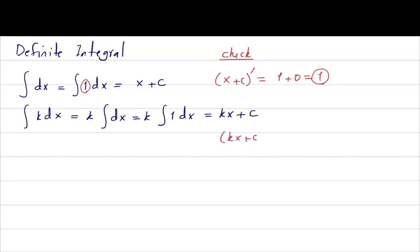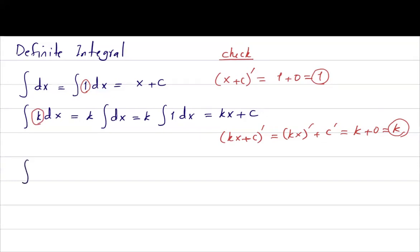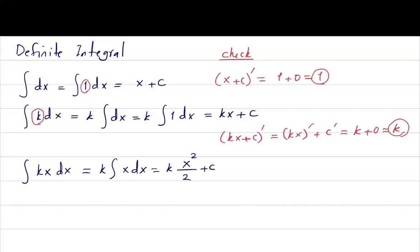You can check this work by taking the derivative of k x plus c. This becomes the derivative of k x plus the derivative of c, which is k plus 0, or k. So k matches the integrand, confirming the result. Then the integral of k x dx can be written as k times the integral of x dx, which is x squared divided by 2, multiplied by k, plus constant of integration.